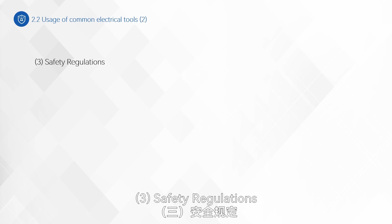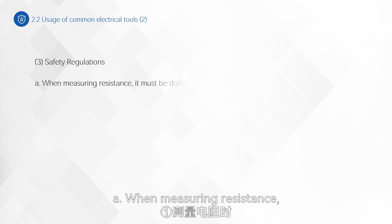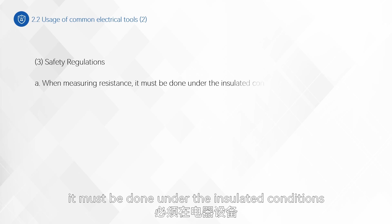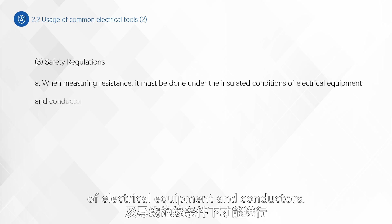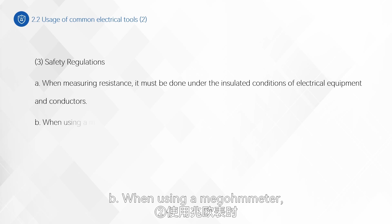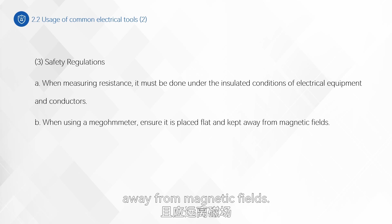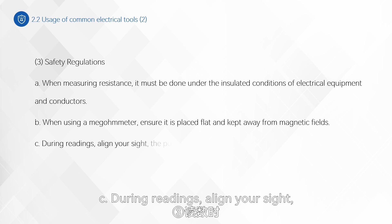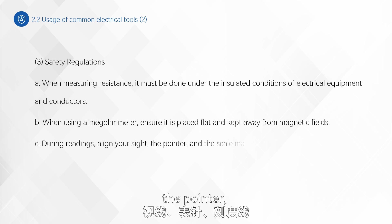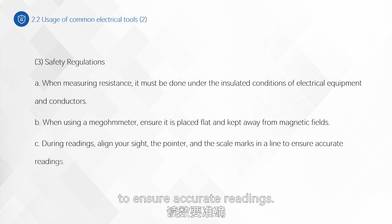Safety regulations: When measuring resistance, it must be done under the insulated conditions of electrical equipment and conductors. When using a megometer, ensure it is placed flat and kept away from magnetic fields. During readings, align your sight, the pointer, and the scale marks in a line to ensure accurate readings.